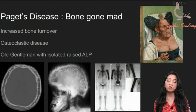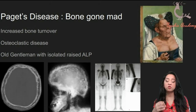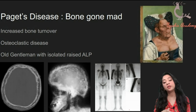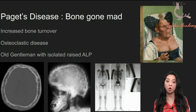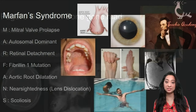Another thing which might appear on your PLAB 1 exam is that these individuals often have hearing problems. If there's increased bone turnover especially around the skull area, it might impinge on the auditory nerve, which is why patients may complain of hearing loss. That's everything you need to know about Paget's disease.